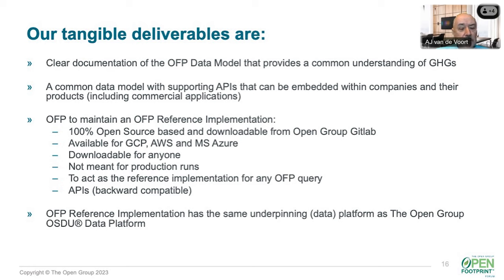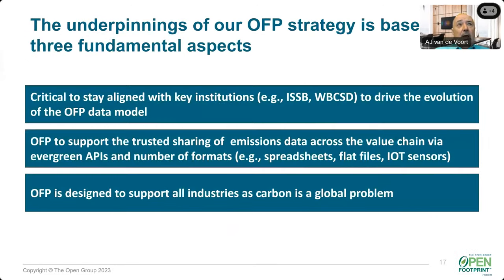What are our deliverables? First, clear documentation of the OFP data model. Second, the data model with supporting APIs that can be embedded within companies and their products. Third, 100% open source and downloadable from GitLab, available on GCP, AWS, and Azure, and downloadable by anyone. Our environment is not meant for production runs — we are a reference model. The APIs will be backwards compatible, and our reference implementation has the same underpinning as the Open Group's OSDU.